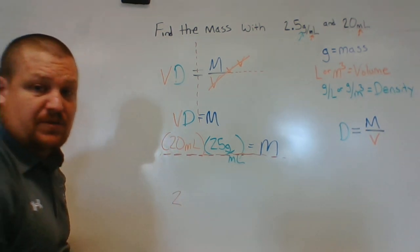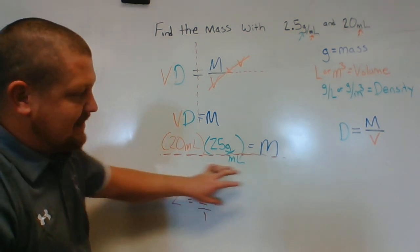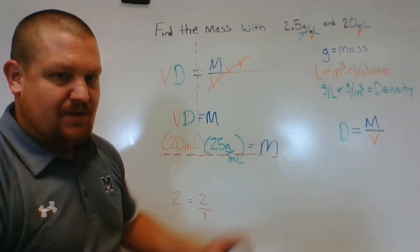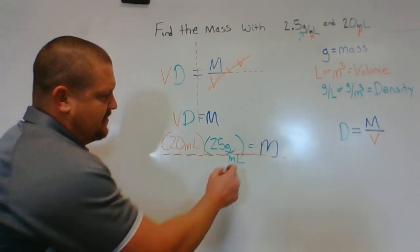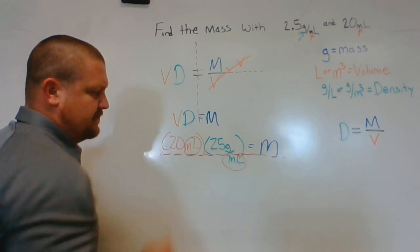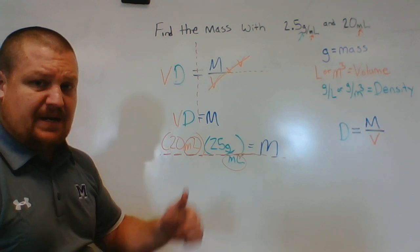You can always assume every number is like itself over one. For example, you know, two—we can always represent two as two, or we could represent two as two over one. So we always got this denominator here that we don't tend to think about. So in our denominator we have milliliter, and milliliter we got the same thing in the numerator as the denominator. Same thing on top and bottom.